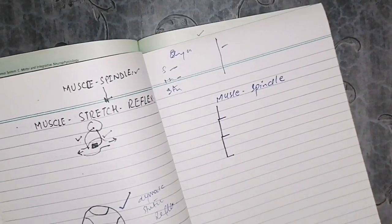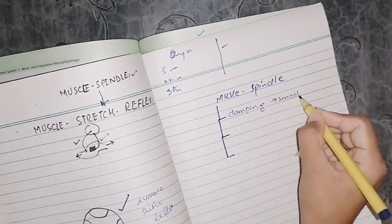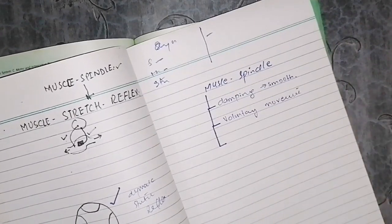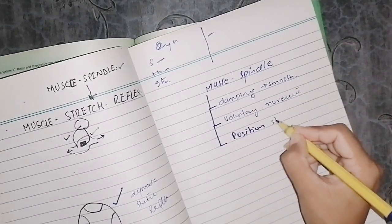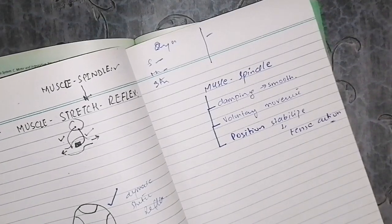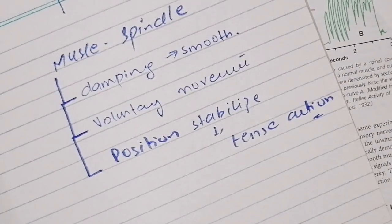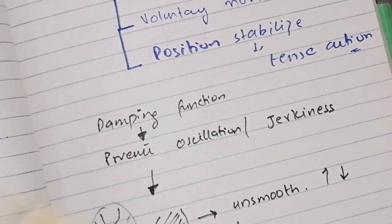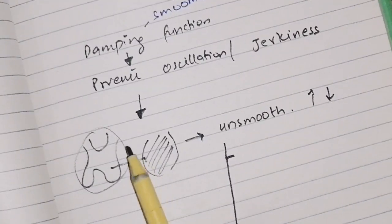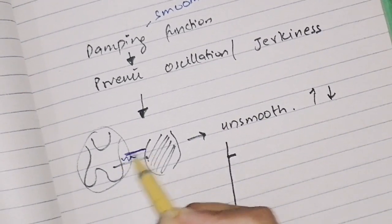The muscle spindle generating the stretch reflex has three major functions you need to remember. First is the damping function — to smooth the muscle response. Second, the muscle spindle is involved in the control of voluntary movement. Third, the muscle spindle helps stabilize our body during tense activities, maintaining the posture and position.